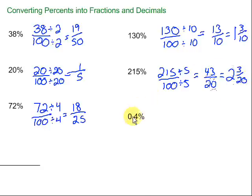Last one. We have 0.4%. 0.4% means 0.4 out of 100. Now, we have a small problem. We can't have decimals in fractions. So to get rid of that decimal, we can move it one spot to the right. And if we move it one spot to the right on the top, we have to do the same on the bottom.